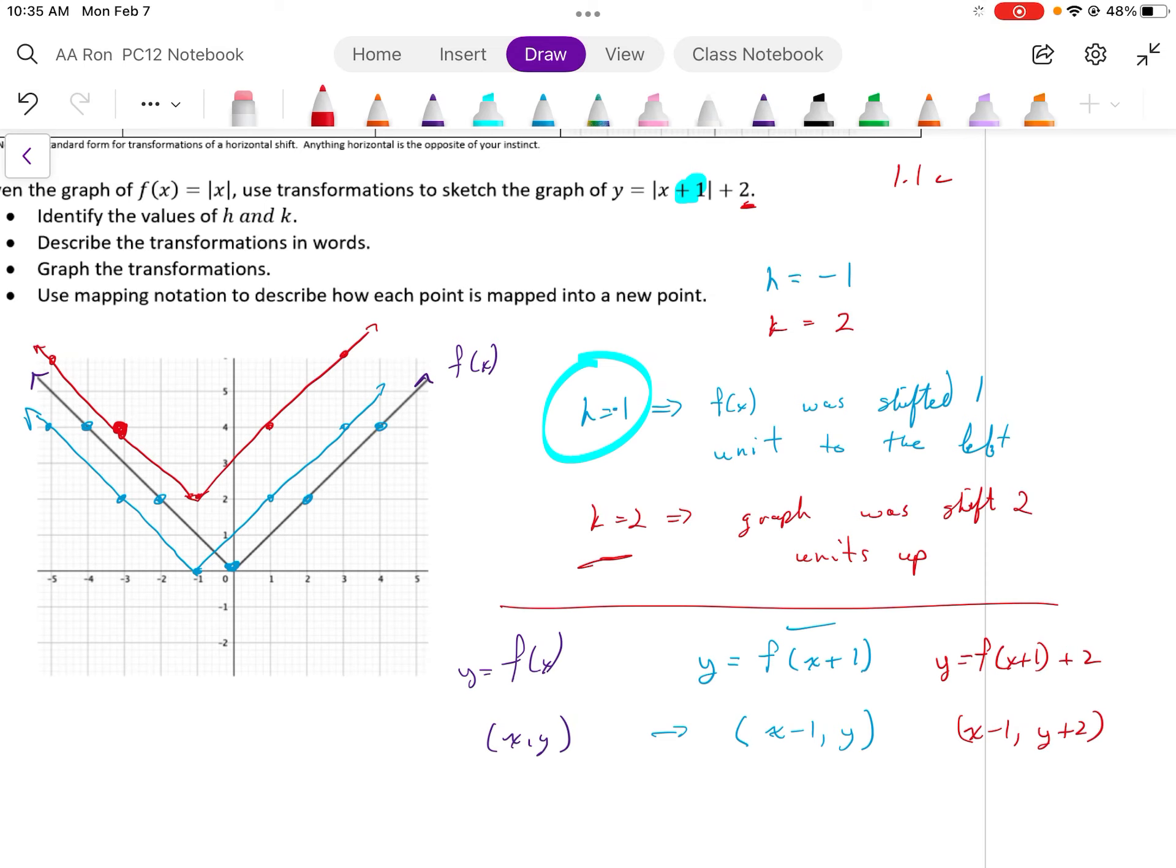And if you wanted to write this in more conventional functional notation, you'd start off with y equals the absolute value of x. And when you shift this function one unit to the left, it would look like this. And if you shift y equals the absolute value of x plus 1 up two units, it would look like this. And if you notice, that was my intended goal.